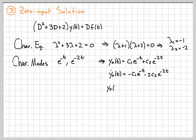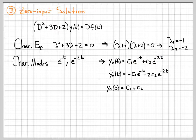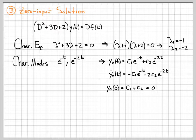Now let's go ahead and plug in. At time zero, if I plug t equals zero into this equation, e to the zero is one, so I just end up with c1 plus c2. We figured out what the initial condition was for this — it was equal to zero. So we know that c1 plus c2 equals zero.